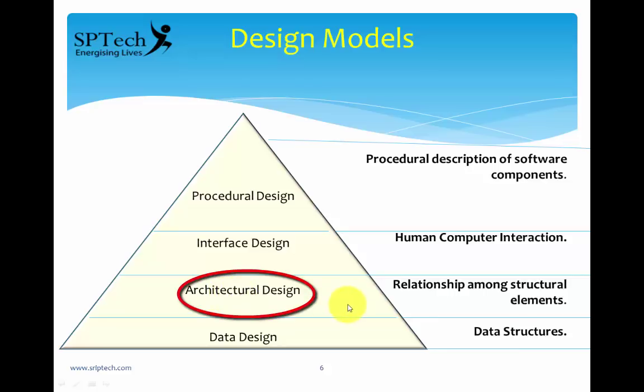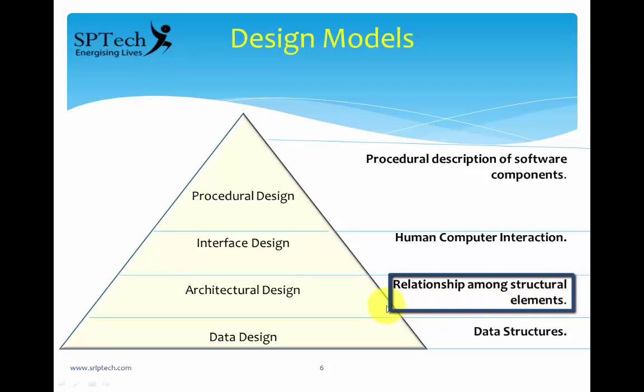Then you have architectural design, which basically shows the relationships among structural elements. Structural elements are the various subsystems of your software. For example, in an ATM machine you have a card reader subsystem, a printer subsystem, and a subsystem that validates the magnetic strip of a card. Architectural design proposes a design where the entire system is visualized in the form of subsystems — it is a top-level view of the entire system.